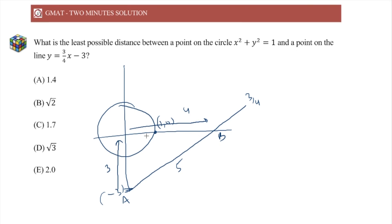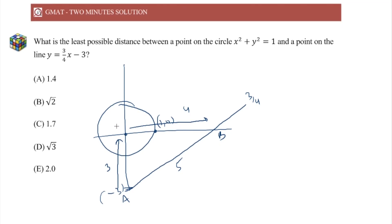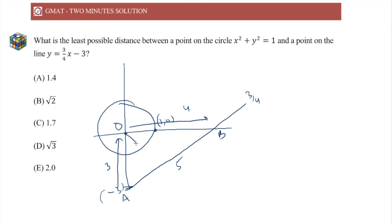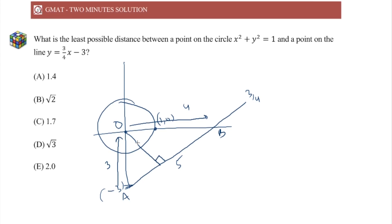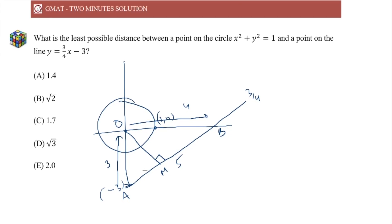Alright, now what is the least possible distance? Let's talk about the least possible distance from O to AB first of all. That will be the altitude, this will be the least possible distance, OM.